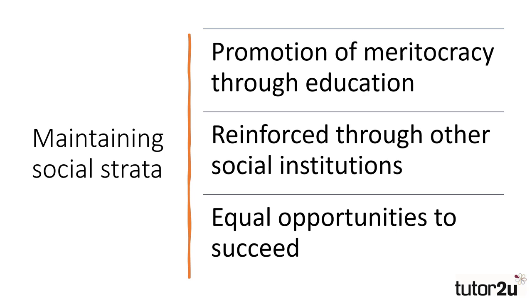How is this maintained? Well, for functionalists, the key to stratification is promoting ideas of meritocracy and people acquiring status through their achievements, rather than through being given ascribed status at birth. They argue that providing equal opportunities for people to achieve status in society will reduce the level of conflict, as those with lower status will have the opportunity to improve their positions through education and employment. This makes it fair, and those who do have higher status are respected for their talents and their dedication. The main social institution that fulfills this function of promoting meritocracy is education, with people having the ability to show their talents and be allocated to higher roles in society.